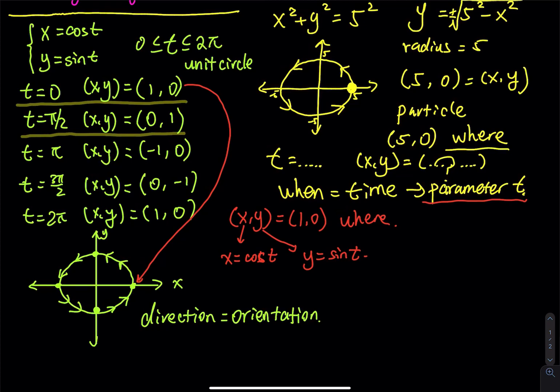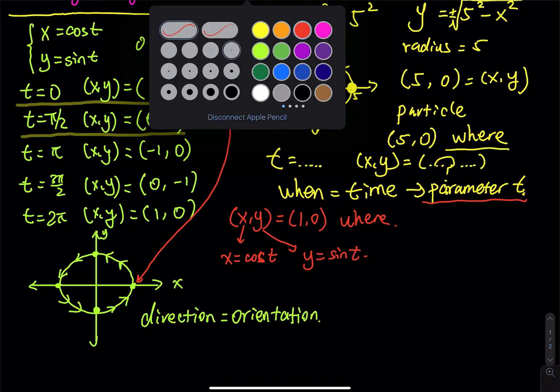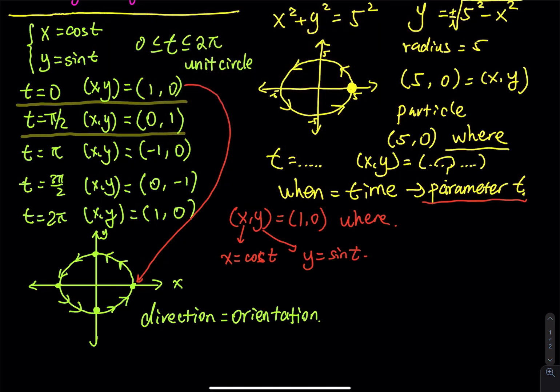The circle we have here is called a parametric curve. In most textbooks, the parametric curve is labeled with a big C, and it is also called a plane curve. The formal definition of the parametric curve and parametric equation will be covered in the next video.